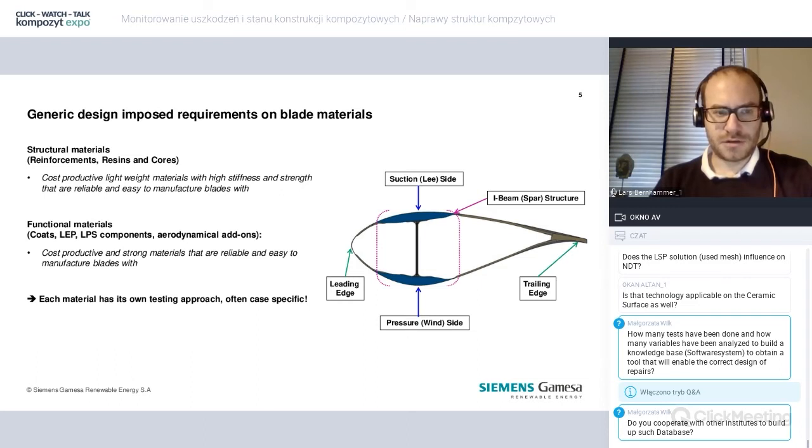Overall, we are looking for materials that are very cost effective, have a high stiffness and strength and at the same time are reliable and easy to manufacture. Cost is one of the major drivers in our industry and it is what we are trying to match. And the cost level is very different from aeronautical applications. At the same time, we have a set of what we call functional materials, meaning our coatings, our leading edge protection, lightning protection system, as well as aerodynamic add-ons. And again, for those, we have an own dedicated validation plan built up.